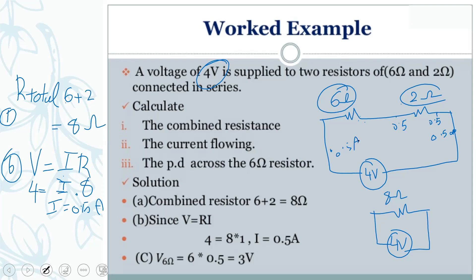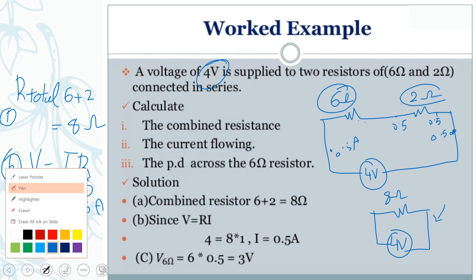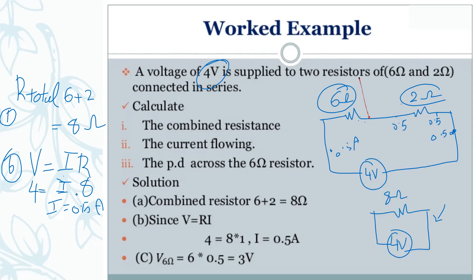Now for part C: I need to find the potential difference across the six-ohm resistance. They want me to find the voltage on the six-ohm resistance. To do this, I go back and use the voltmeter — I place it only on the six-ohm resistance to measure that voltage.